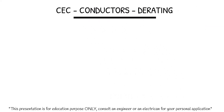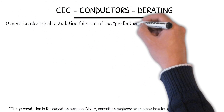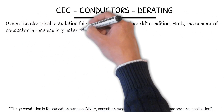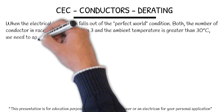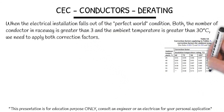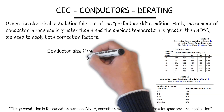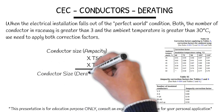When the electrical installation falls out of perfect world conditions — both the number of conductors in the raceway is greater than 3 and the ambient temperature is greater than 30 degrees Celsius — we need to apply both correction factors from Table 5A as well as Table 5C. We get the conductor size and ampacity, multiply by both correction factors, and compare the new derated ampacity to see if it's still carrying the load safely.